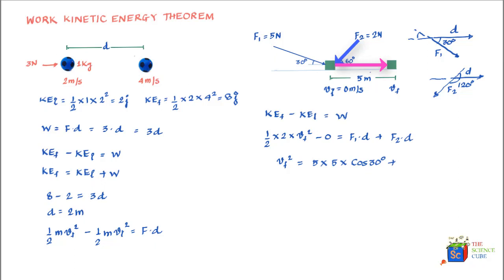The dot product F2 · d = 2 × 5 × cos(120°). It is important to correctly determine the placement of vectors to find the right angle between them. Solving for V_f: V_f² = 21 − 5 (the second term is negative because cos(120°) is negative), giving V_f = 4 meters per second.